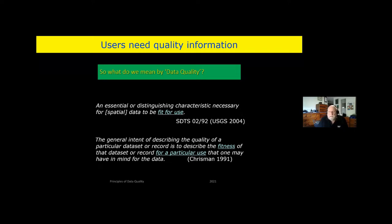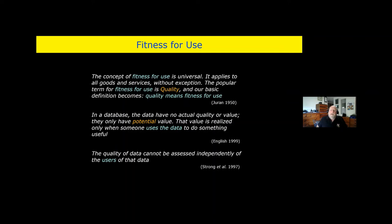The first quote is from the United States Spatial Data Transfer Standard, which says: 'an essential or distinguishing characteristic necessary for data to be fit for use.' Christman wrote a very good book on data error, and the general intent of describing the quality of a particular dataset or record is to describe the fitness of that dataset for a particular use one may have in mind.